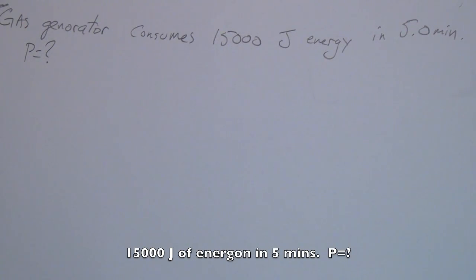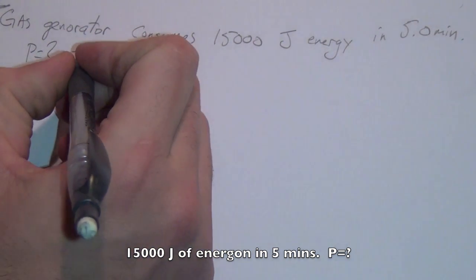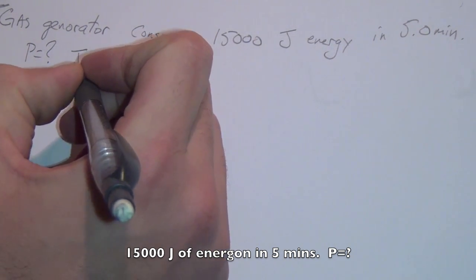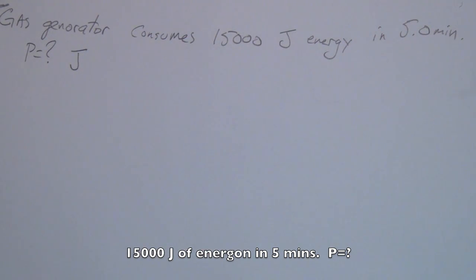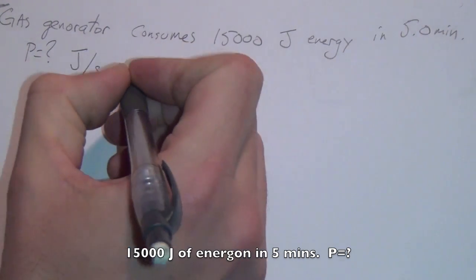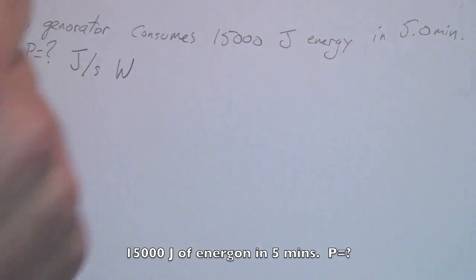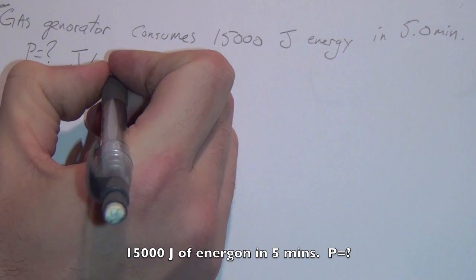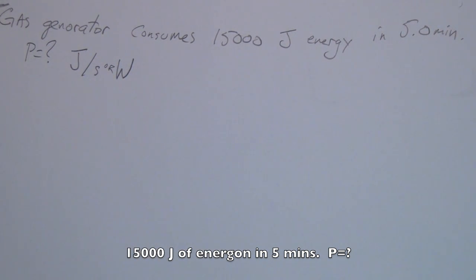Okay, so here I have a question. Let's say a gas generator consumes 15,000 joules of energy in five minutes. So the question is, how much power is produced in this time? Now power is the amount of energy, joules, it's basically joules for every second. Joules per second or watts. You can think of power as that. So that gives us a hint of what our formula is going to look like.